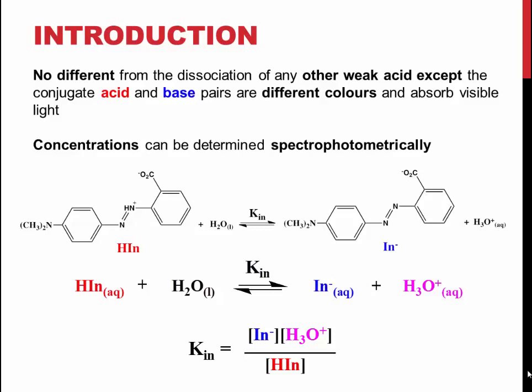The light absorbed by the molecule is in the visible spectrum, so the concentration of the ions and conjugate acid can be found using spectrophotometry, a technique which you may have encountered last semester.